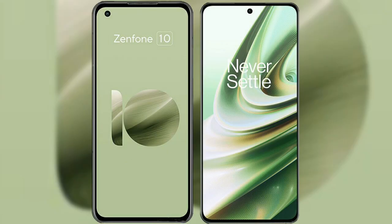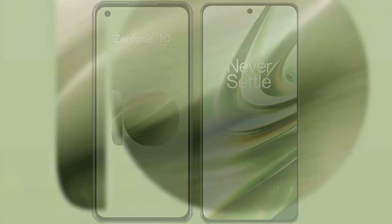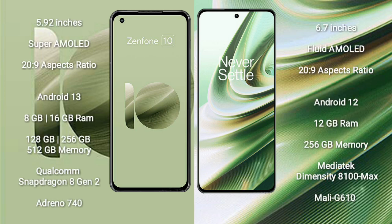I will compare the new Asus Zenfone 10 with the OnePlus 10R. The Asus Zenfone 10 comes with a 5.92-inch Super AMOLED display with a 20:9 aspect ratio. The OnePlus 10R comes with a 6.7-inch flat AMOLED display with a 20:9 aspect ratio.